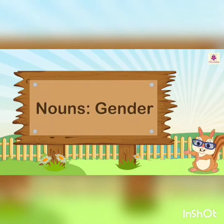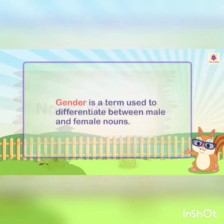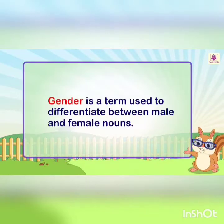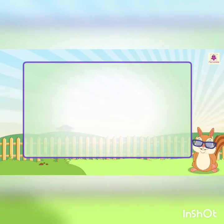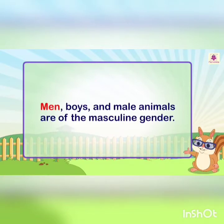Nouns. Gender. Gender is a term used to differentiate between male and female nouns. Men, boys, and male animals are of the masculine gender.